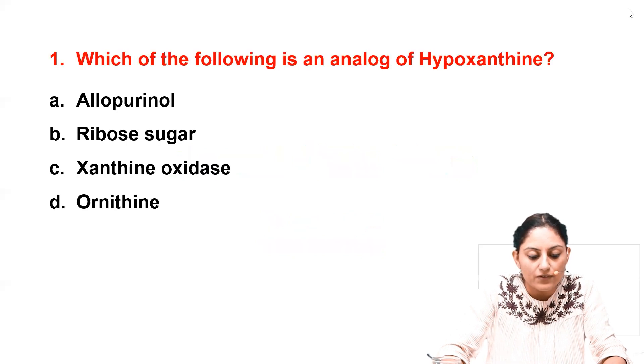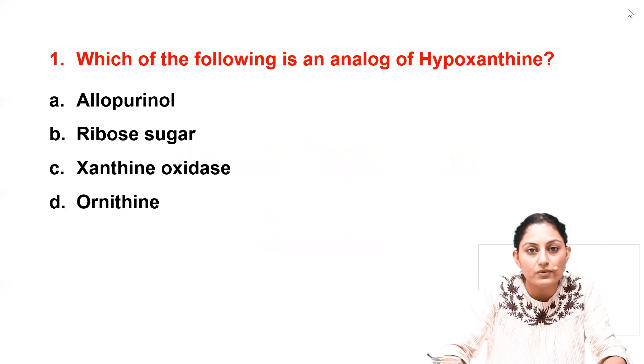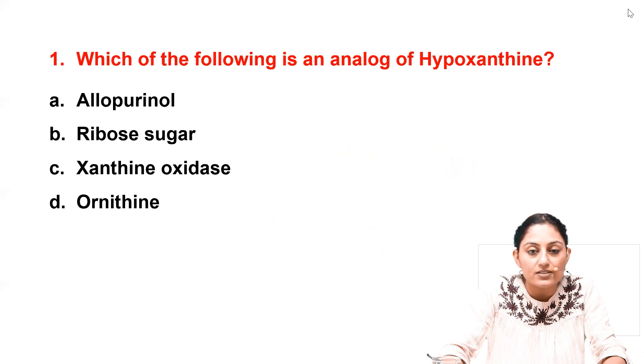The first question is: which of the following is an analogue of hypoxanthine? The options provided are allopurinol, ribosugar, xanthine oxidase, and ornithine.